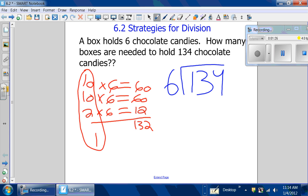6 can't go into 1. It cannot go into 3 either. But it can go into 13. So 6 can go into 13, 2 times. 6 times 2 is 12. And 13 minus 12 equals 1.